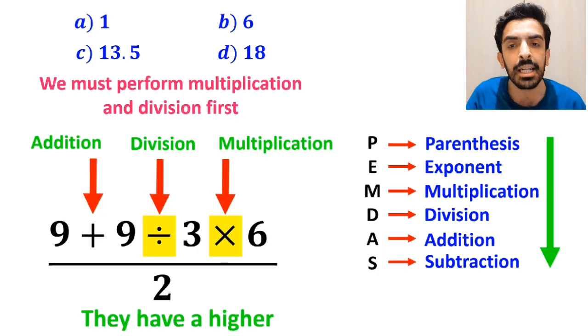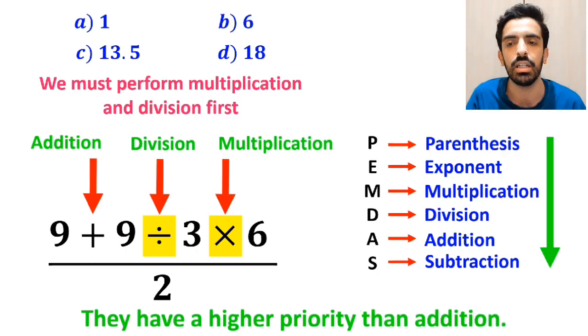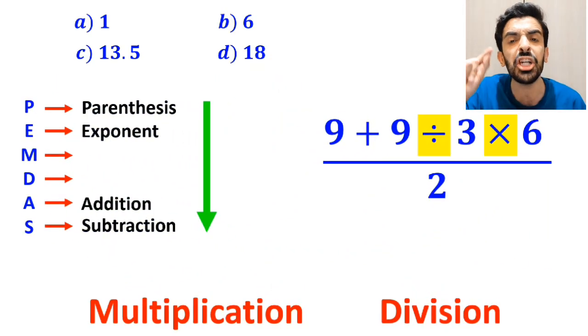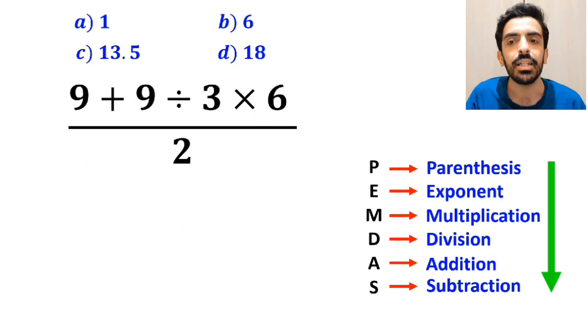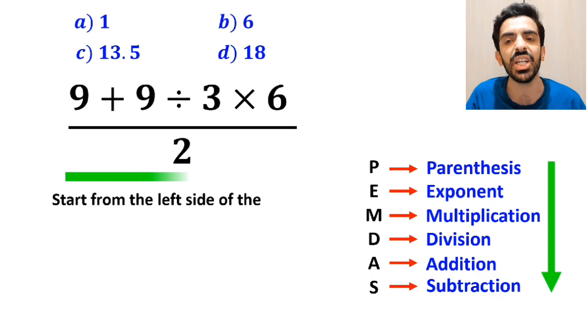Because they have a higher priority than addition. However, it's very important to remember that multiplication and division are at the same level of priority. In this case, the best thing to do is to start from the left side.